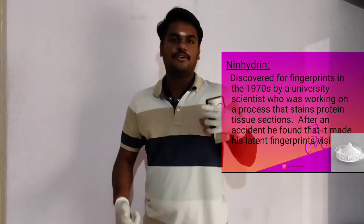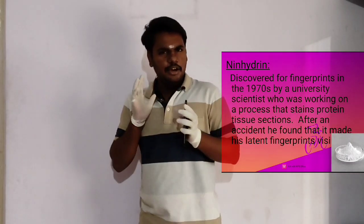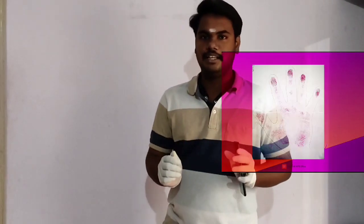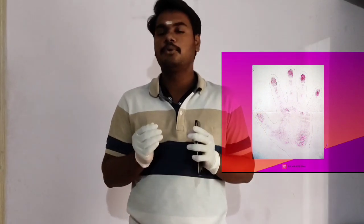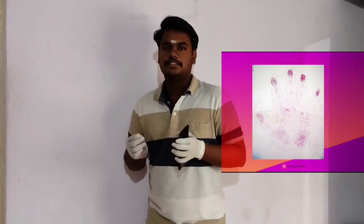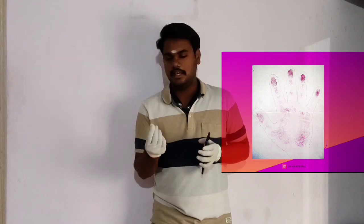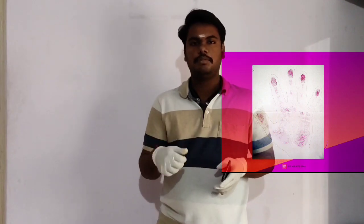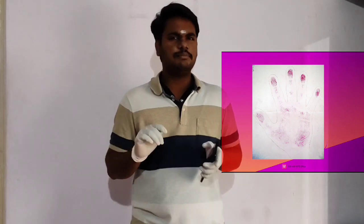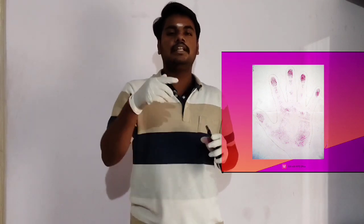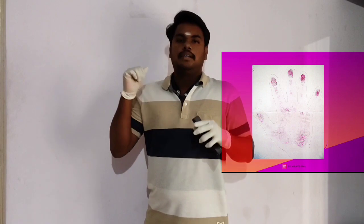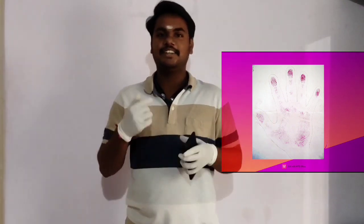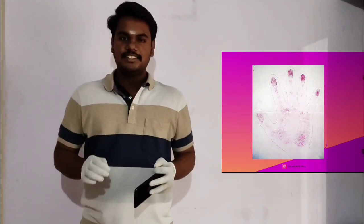In this slide you can see what the Ninhydrin method is and how it works. It produces a blue color — a visible reaction — which reacts to the proteins present in your sweat as well as in your fingerprints. Fingerprints are basically composed of sweat plus sebum. Sebum consists of oil, and this oil contains some proteins, upon which Ninhydrin reacts. In the next slides you can see how the fingerprints appear as a blue color.